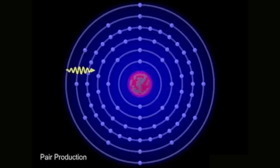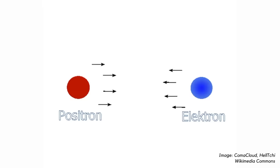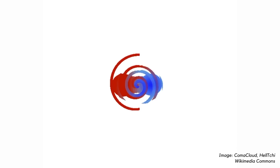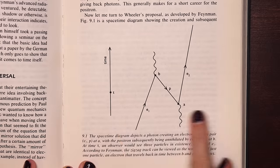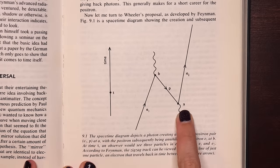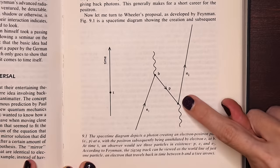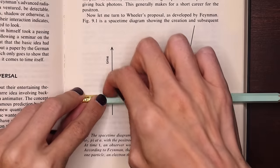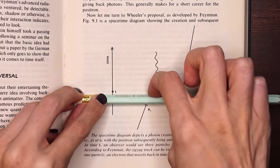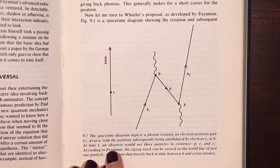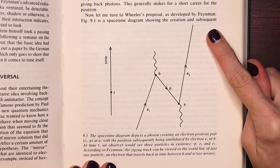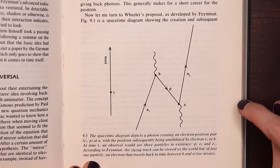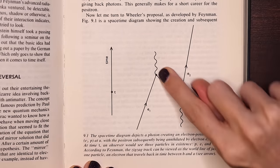Electrons and positrons are created together in pairs, usually from a photon colliding with an atom. They fly off, and if a positron were to run into an electron the pair would instantly annihilate, reversing the pair creation process and giving back photons. This is a space-time diagram where a photon coming into point A creates an electron-positron pair. The positron then meets with another electron and annihilates, giving back a photon. At time t an observer would see three particles: an electron, a positron, and another electron. But according to Richard Feynman, this zigzag track could be viewed as the world line of just one particle — an electron that travels back in time between these annihilation and creation events.